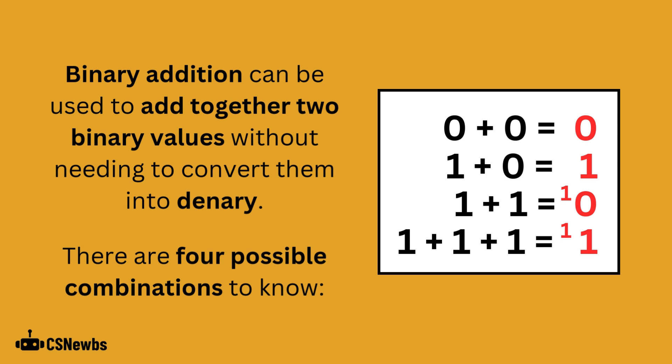Binary addition can be used to add together two binary values without needing to convert them into denary. There are four possible combinations to know. 0 plus 0 is clearly 0. 1 plus 0, or 0 plus 1, is equal to 1.